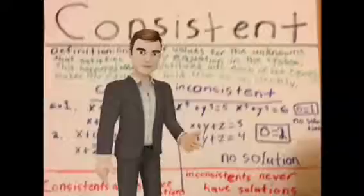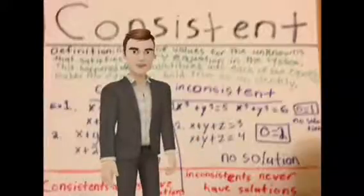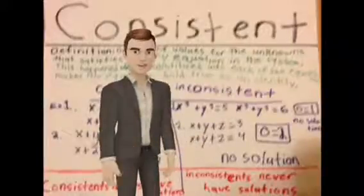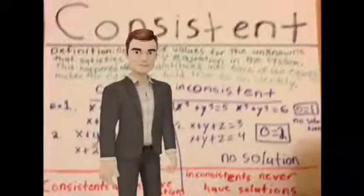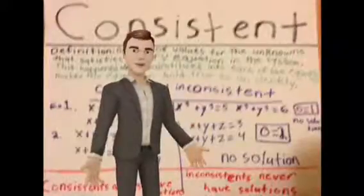Here are two examples of inconsistent. x to the third power plus y to the third power equals 5 and x to the third power plus y to the third power equals 6. The equation will turn out to be 0 equals 1 which is no solution.